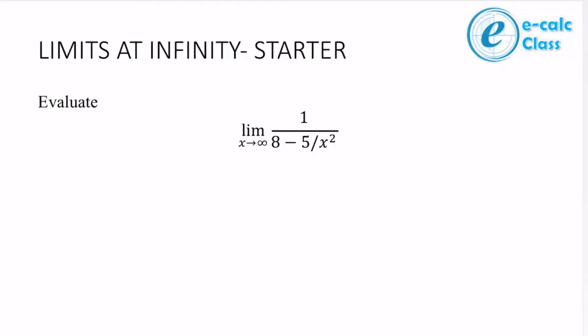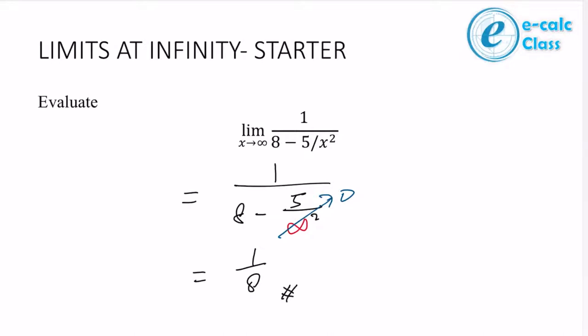We will start with limits at infinity. The starter question is: evaluate the limit as x approaches infinity of 1/x minus 5/x². It's not direct substitution but quite similar. If you put in infinity, you get 1/∞ minus 5/∞². Infinity squared is still infinity, and 5 divided by a very big number gives 0, so the answer is 1/∞ minus 0, which is... well here the example resolves to 1 over something minus 0.